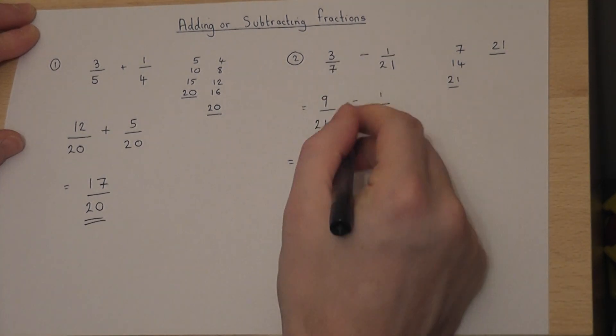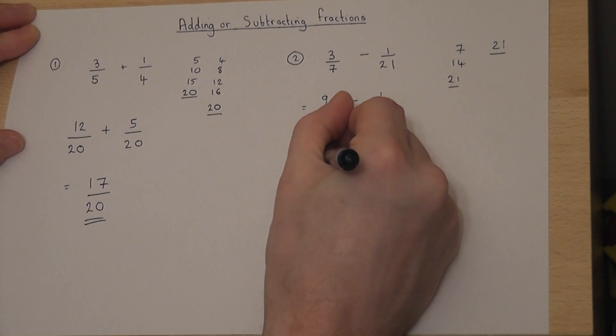I now do 9 take away 1, which is 8. So it's 8 over 21.